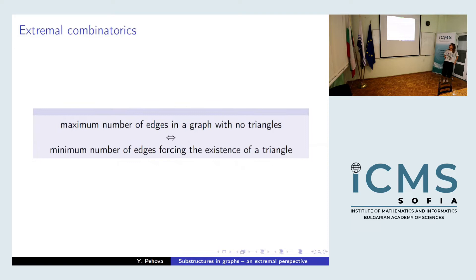Note that finding the maximum number of edges in a graph with no triangles is equivalent to finding the minimum number of edges forcing the existence of a triangle — these are two views of the same bound. So for the rest of the talk, when I talk about conditions forcing the existence of substructures in graphs, these are extremal questions from this equivalence.